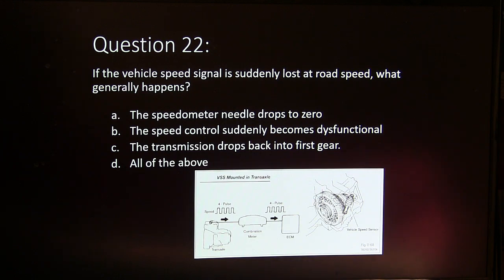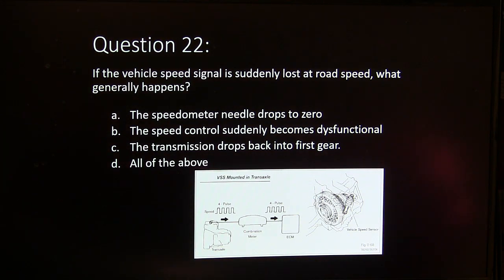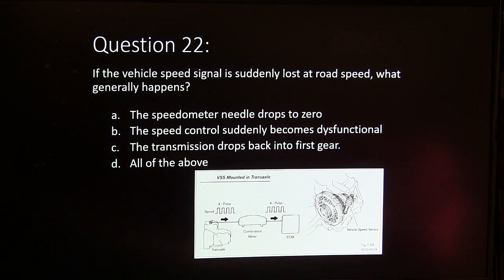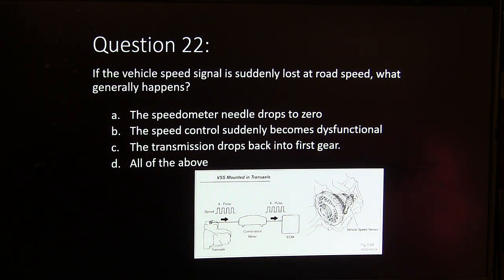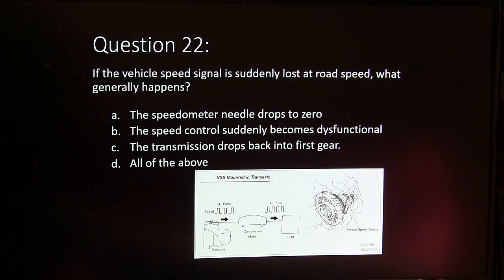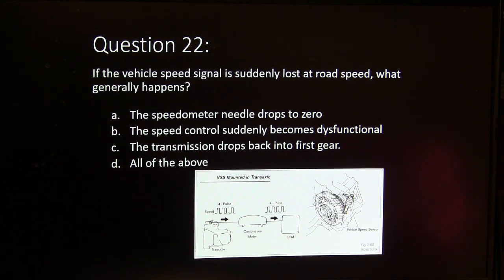Question 22. If the vehicle speed signal is suddenly lost at road speed, what generally happens? A, the speedometer needle drops to zero. B, the speed control suddenly becomes dysfunctional. C, the transmission drops back into first gear. Or D, all of the above.